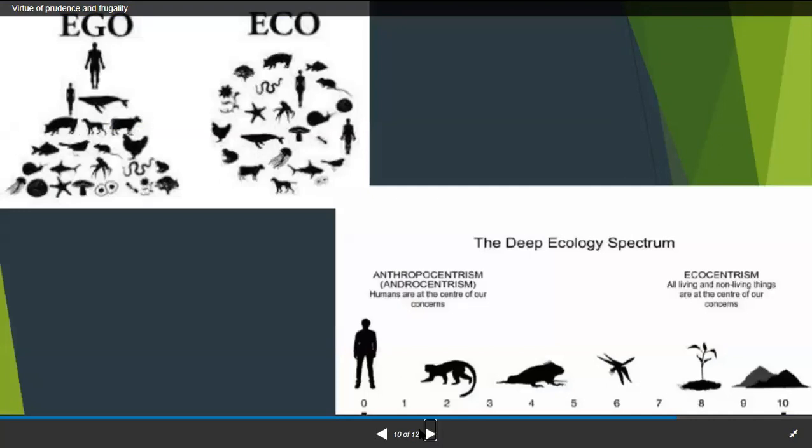Here we can see the deep ecology spectrum. There's anthropocentrism and ecocentrism. In anthropocentrism, humans are the center of our concern because we have this higher thinking skill unlike other animals. In ecocentrism, all living things and non-living things are at the center of our concern. We are all the same, we take care of each other. But in anthropocentrism, demand is higher than other living things, so we need to protect those underneath us.